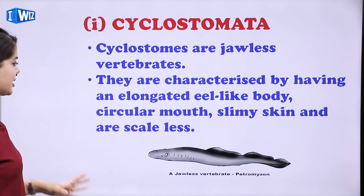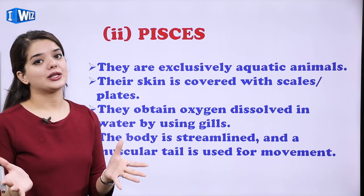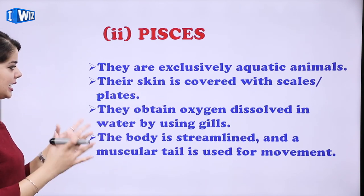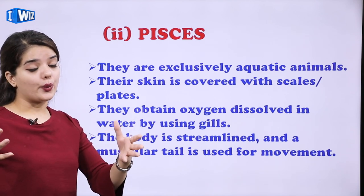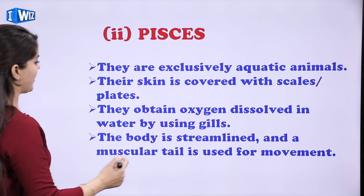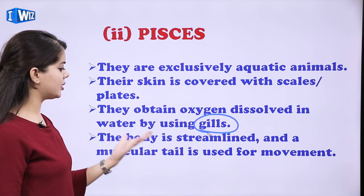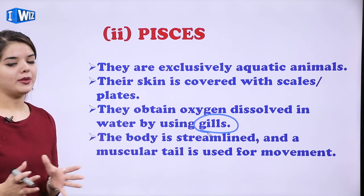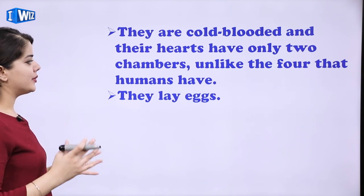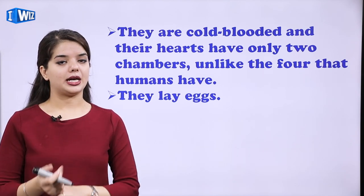Then we have Pisces, which are exclusively aquatic animals — just like the Pisces zodiac sign shows two fishes. Their skin is covered with scales. They obtain oxygen dissolved in the water by using gills — a special structure for oxygen uptake. The body is streamlined and a muscular tail is used for movement. They are cold-blooded and their hearts have only two chambers, unlike the four-chambered heart of humans. They also lay eggs.